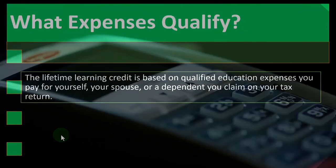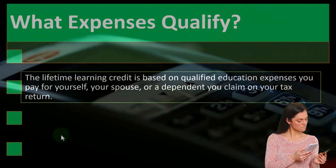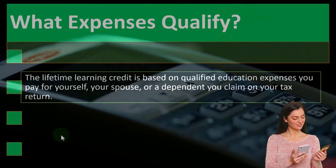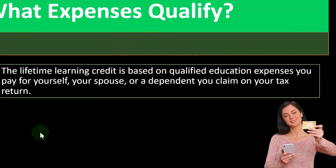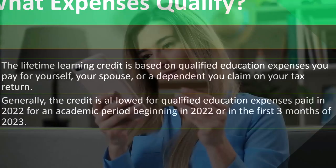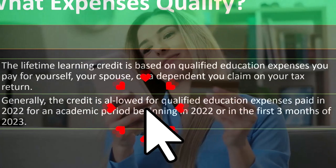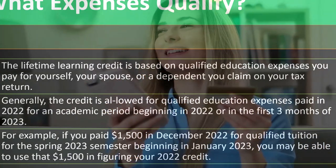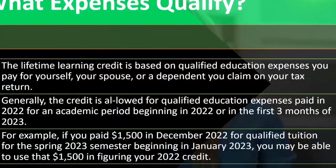Lifetime learning credits — what expenses qualify? This is going to be similar to what we looked at with the American Opportunity Credit, but not exactly the same, so you'll see some similarities and differences. The lifetime learning credit is based on qualified education expenses you pay for yourself, your spouse, or a dependent you claim on your tax return. Generally the credit is allowed for qualified education expenses paid in 2022 — we're on a cash-based system — for an academic period beginning in 2022 or the first three months of 2023. We have that same cutoff we've seen before.